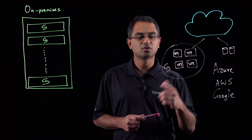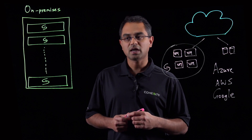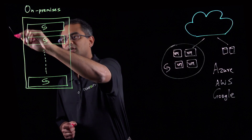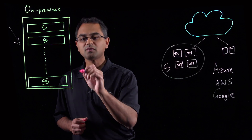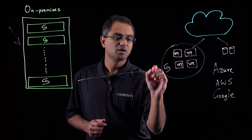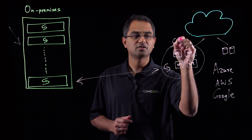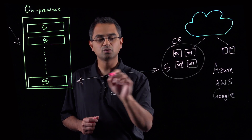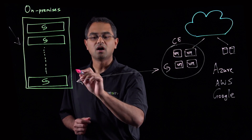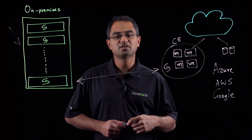Now, how do we leverage this Cohesity Cloud Edition running, let's say, on Azure? We already have a strong policy-based framework for taking backups that land onto the Cohesity platform. Extending these policies, we can now set replication between your on-premises Cohesity cluster and the cloud edition running in the cloud. Through this replication, data that is backed up via policies on Cohesity is replicated to the cluster running in the cloud.